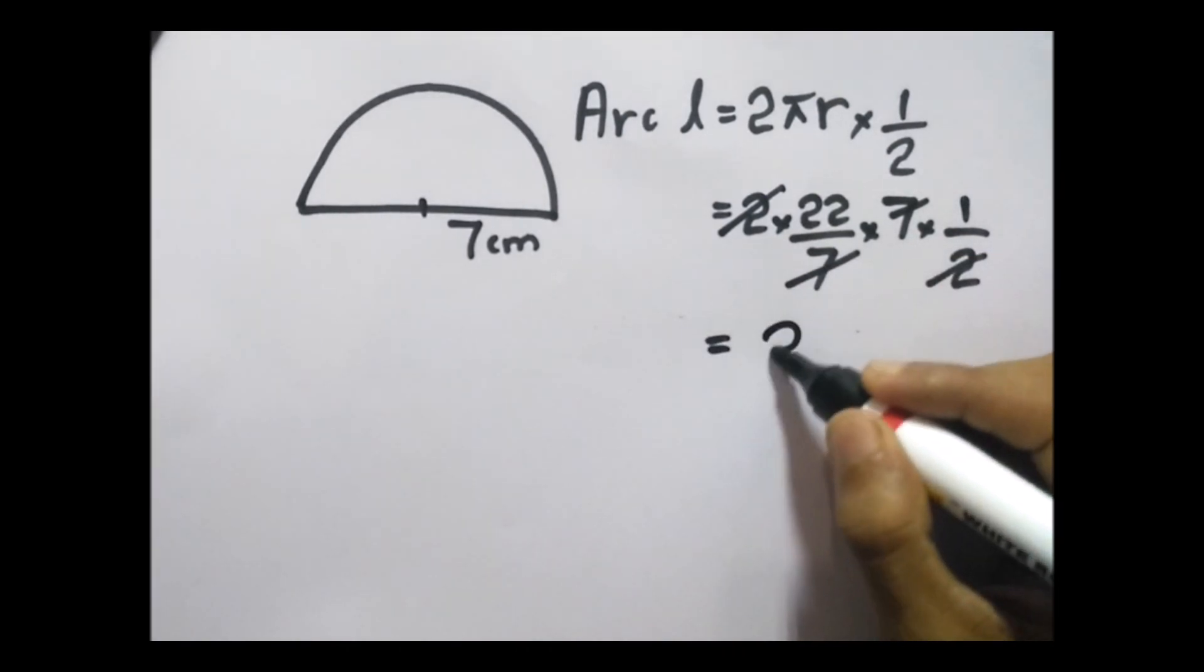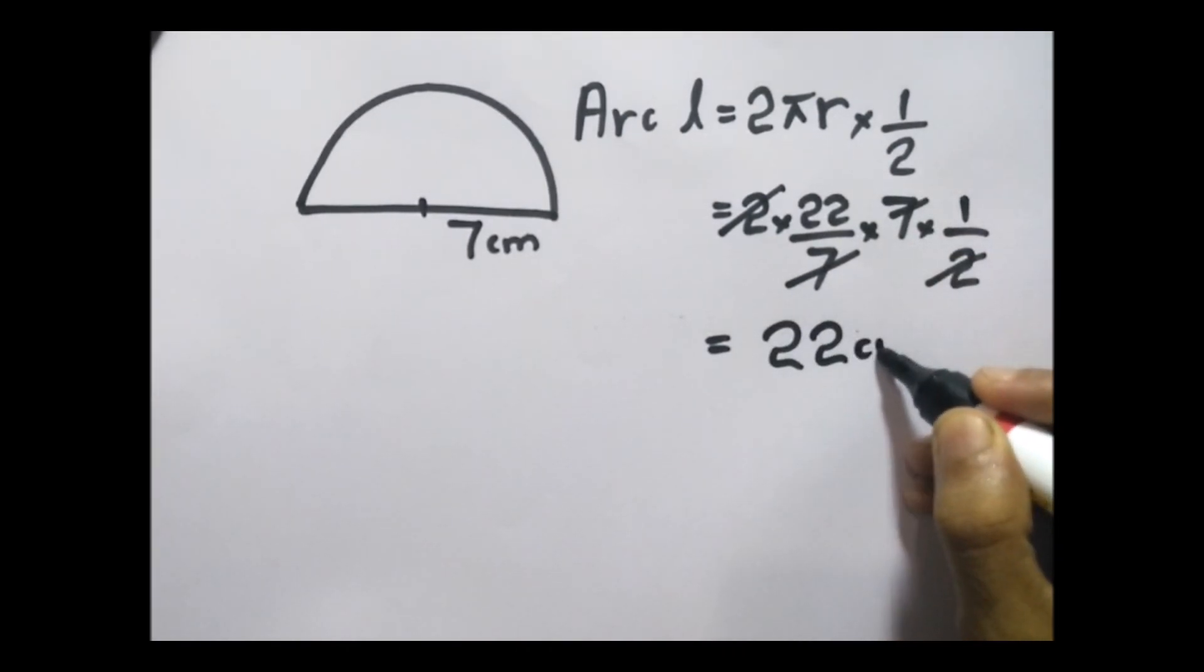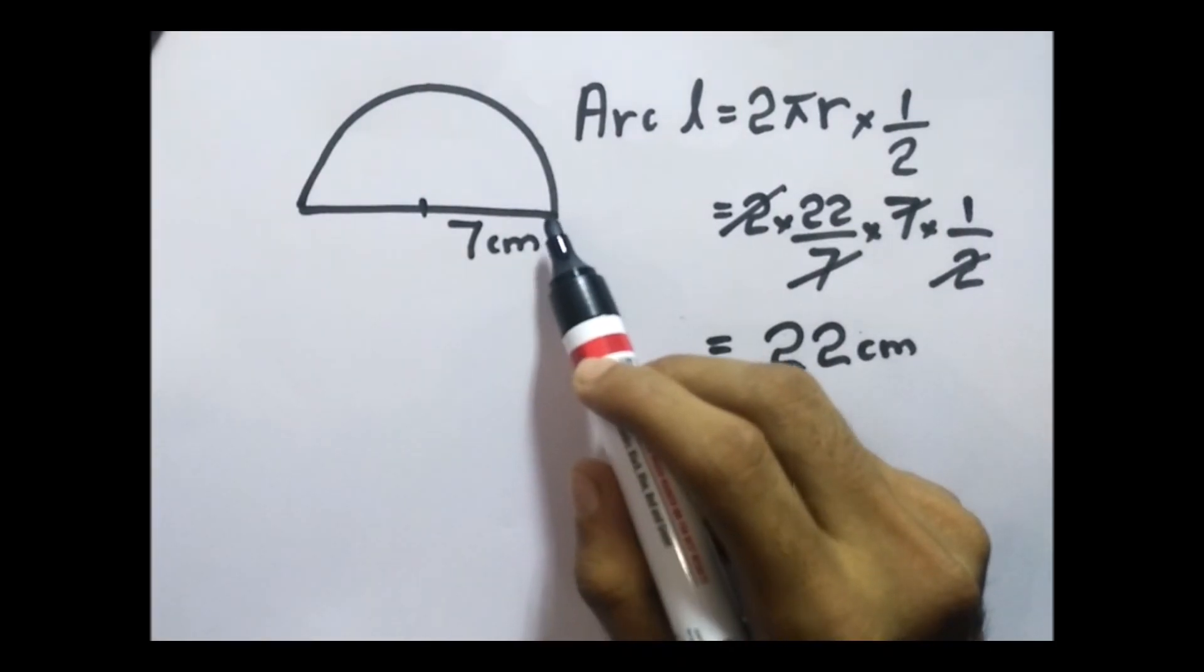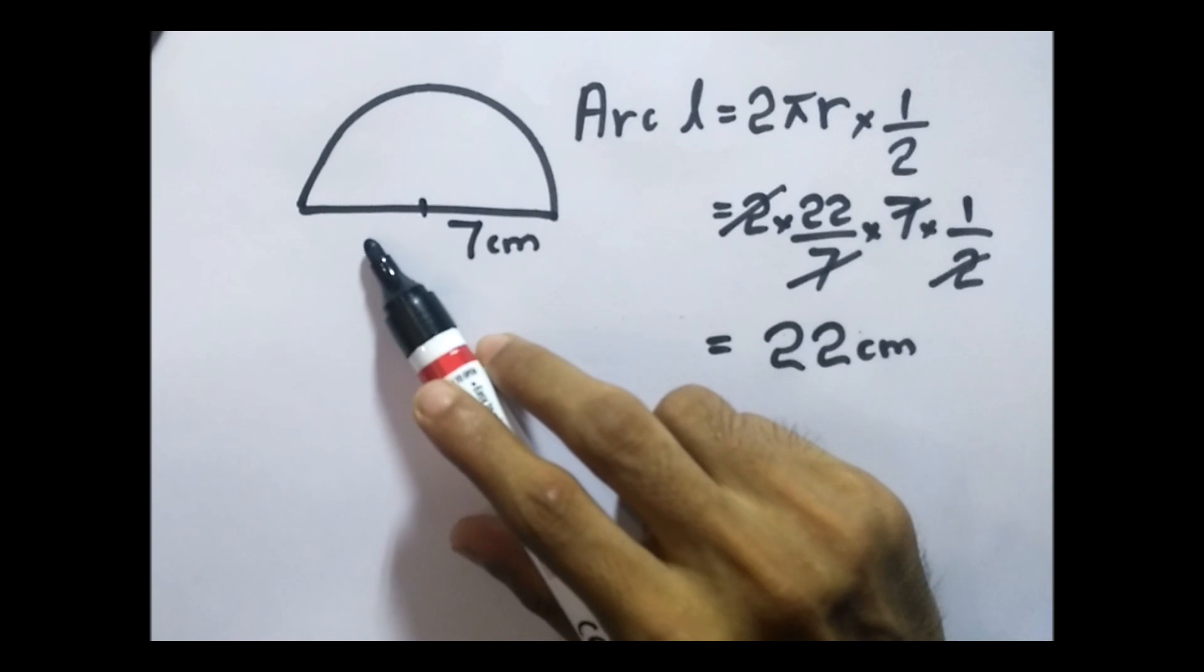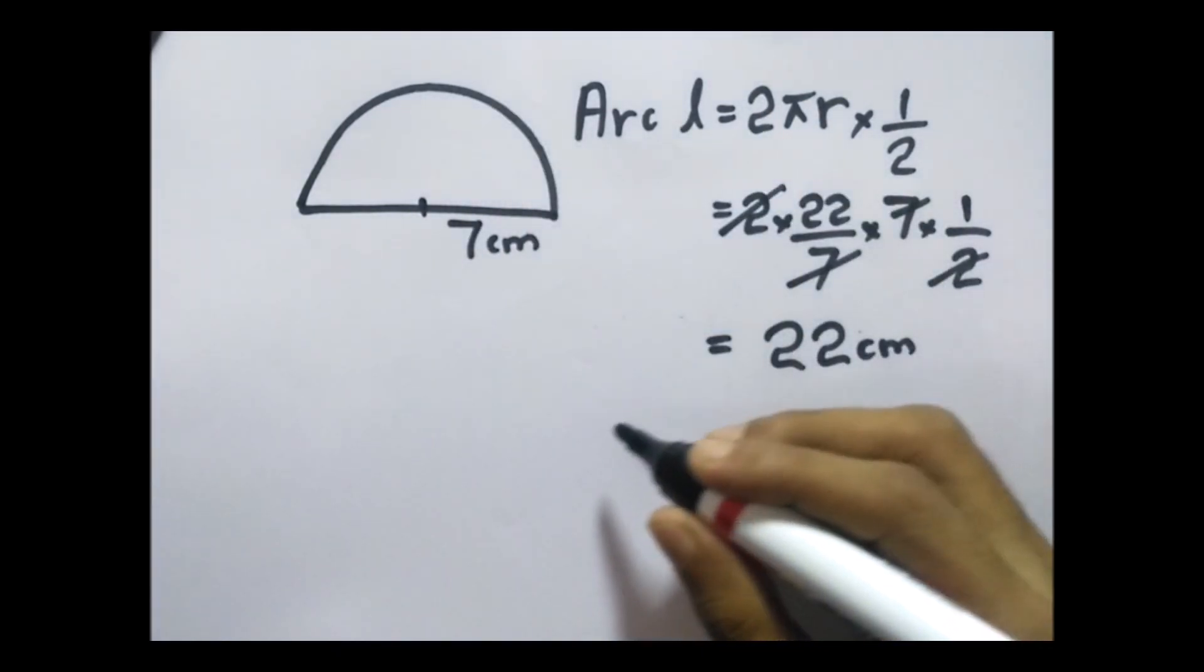Now we can find the perimeter. The length of the diameter is 14 centimeters - that means 7 plus 7 is 14 - plus the arc length is 22. So we have to add them all to calculate the perimeter.